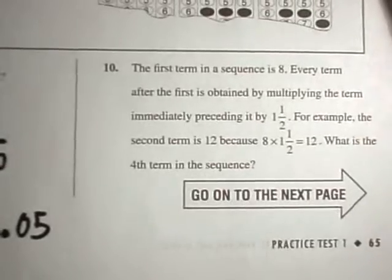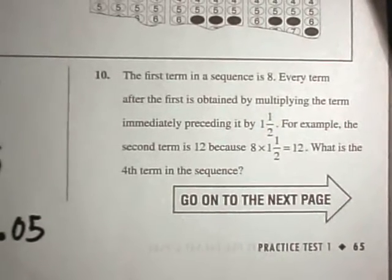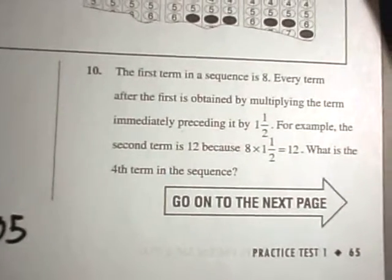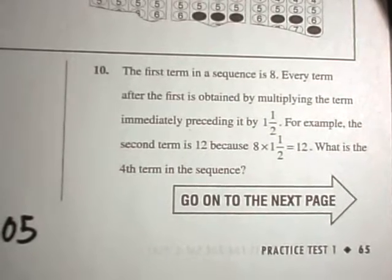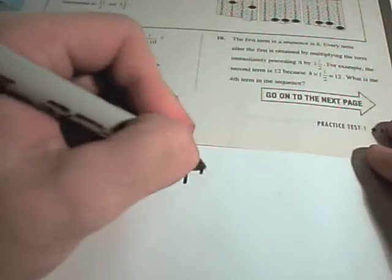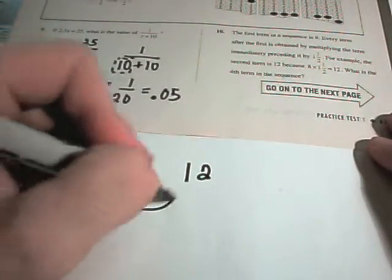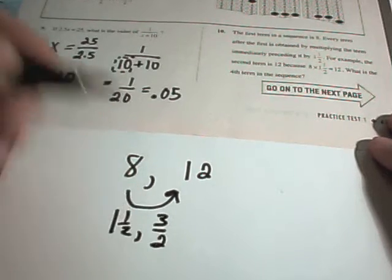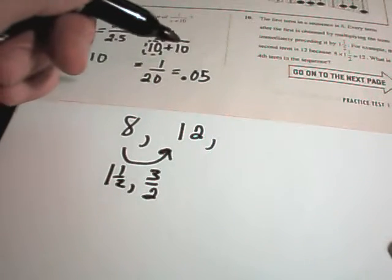Okay, number 10, it says the first term in a sequence is 8. Every term after the first is obtained by multiplying the term immediately preceding it by 1 and a half. For example, the second term is 12 because 8 times 1 and a half is 12. They want to know what the fourth term in the sequence is. So my first term is 8. If you multiply by 1 and a half or equivalently 3 halves, we get the next number, 12. Well, if you multiply 12 by 1 and a half, what number do we get? That will be our third term in the sequence. And then we want to know the fourth term.